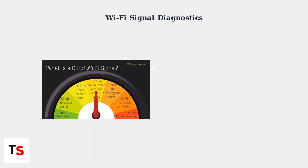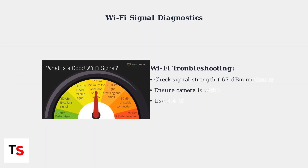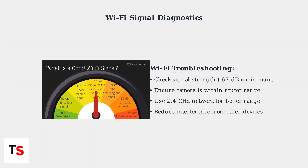For wireless cameras, verify you have a strong Wi-Fi signal with minimal interference. A weak signal or network congestion can cause intermittent video loss. The signal strength should be at least negative 67 decibels for reliable video transmission.